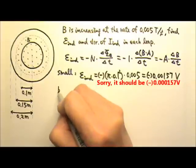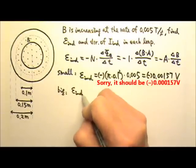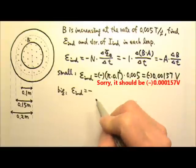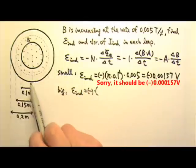Now let's look at the big loop. For the big loop, the induced EMF is also the negative A, the area. Now the big loop has the area of pi times 0.2 squared. But do we use that area? No.